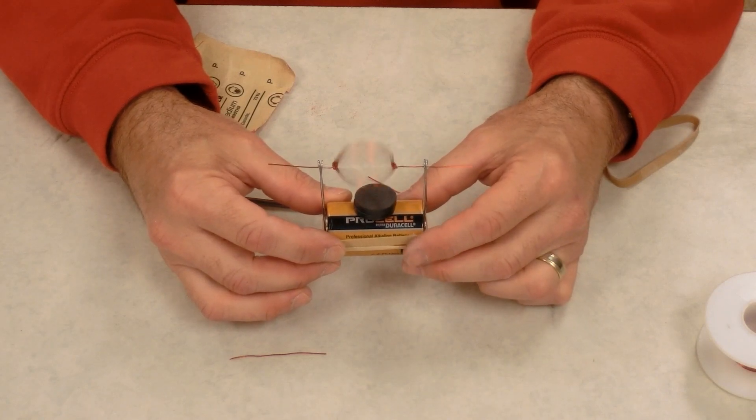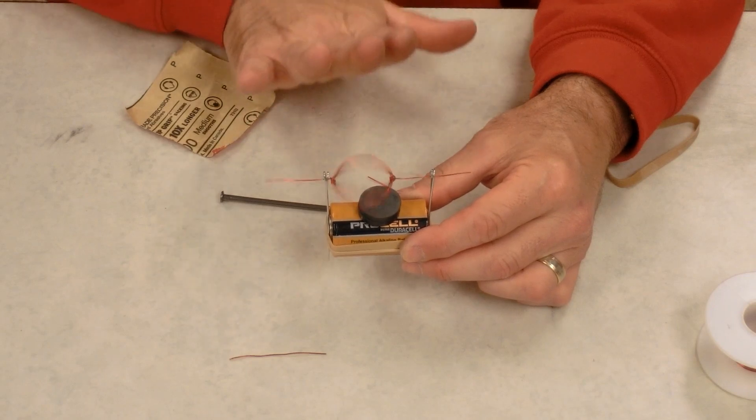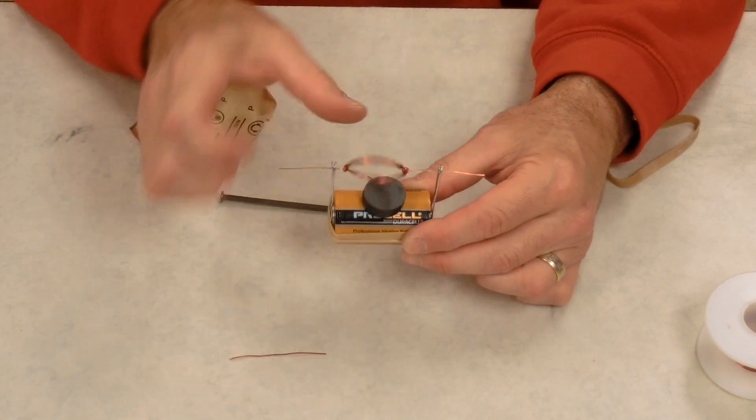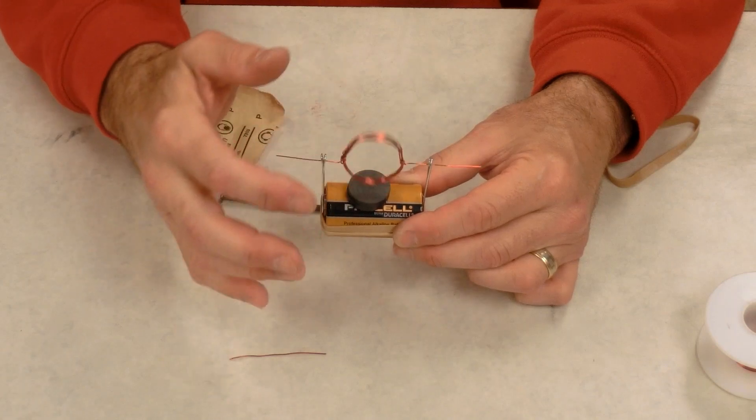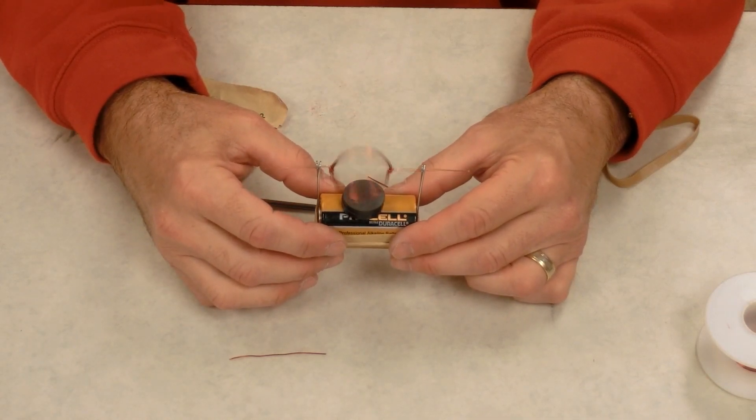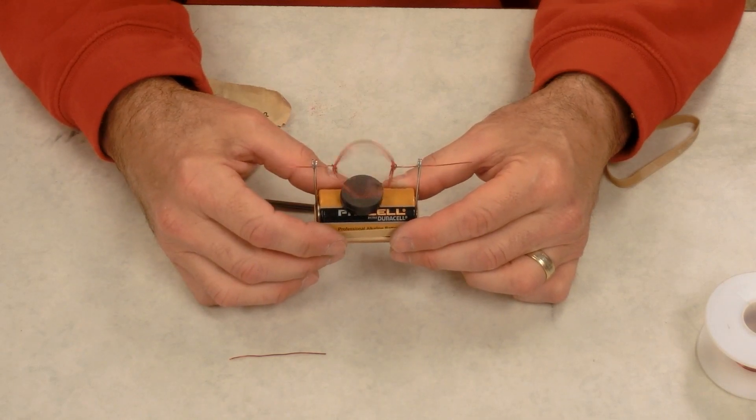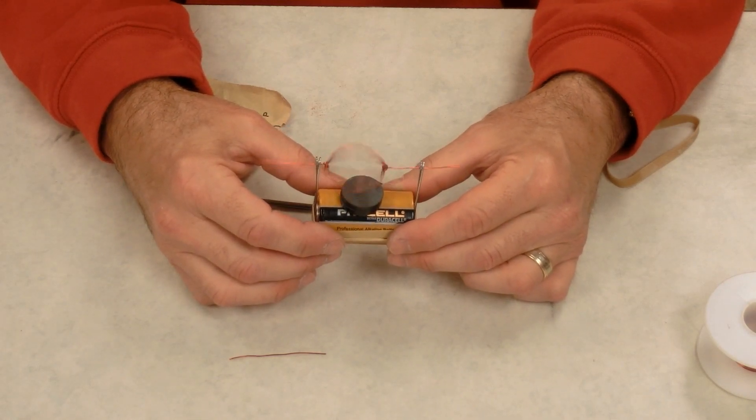So what's happening is that the magnetic field from the permanent magnet puts a force on the magnetic field around the current-bearing wire, and that makes it spin. So this definitely took less than five minutes, so I've gotten much better at making this motor.